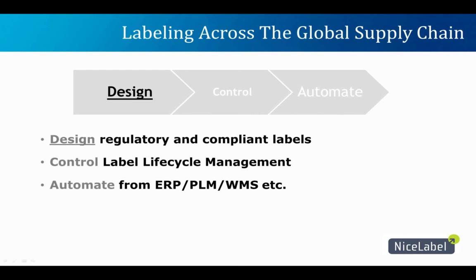The first step is design. You'll set up your label templates in NiceLabel Designer Pro software. You can design regulatory and compliant labels — it's very easy to use, and you can import images and add any barcodes. Those are essentially empty variables waiting for data to be populated at print time. The Automation product passes data through to those variable fields on your label, all behind the scenes and transparent to the end user — a very seamless implementation.